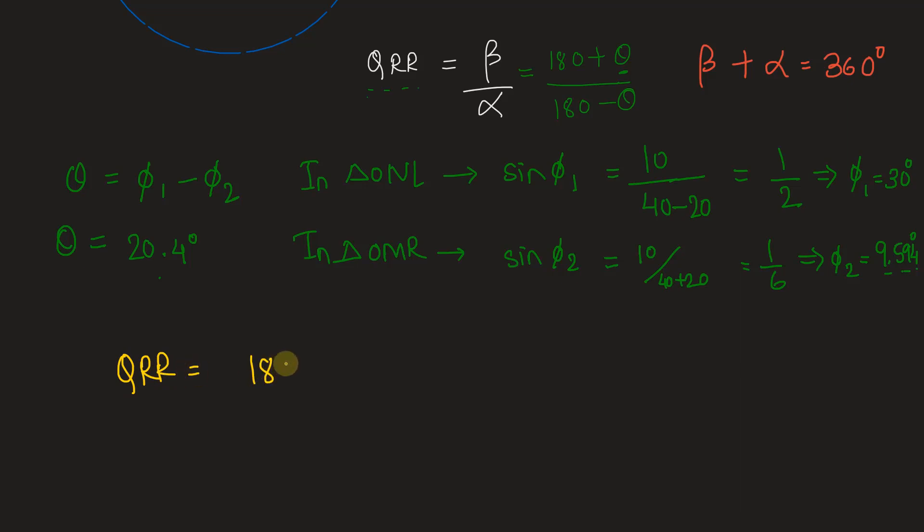Quick return ratio is equal to 180 plus 20.4 divided by 180 minus 20.4, which is equal to 200.4 divided by 159.6, which gives us value of QR quick return ratio as 1.2556. Let's go back and fill in the answer.